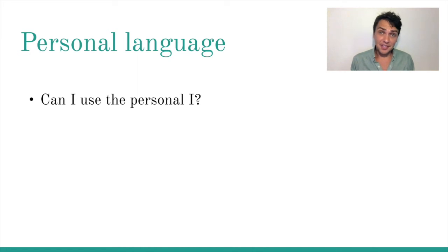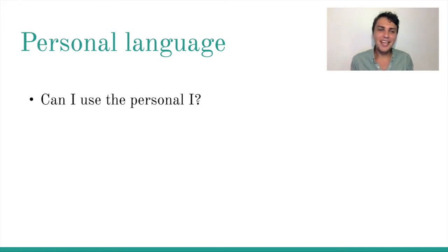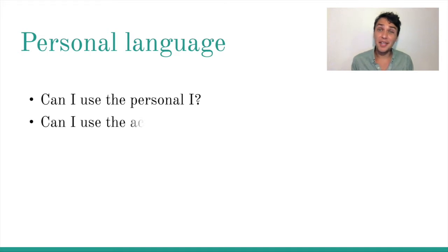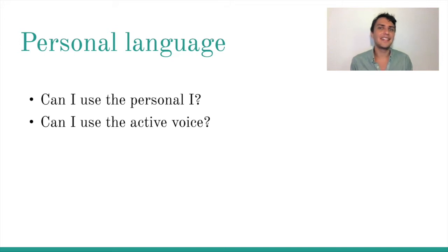Yes, you can use the personal I in an essay. But typically, you don't want to refer to what you think — instead, you want to refer to what your evidence suggests. By all means, make use of the personal I and make use of the active voice. In fact, try to avoid the kind of passive writing that you see in most academic articles. It's kind of boring and it doesn't really help with getting your point across.